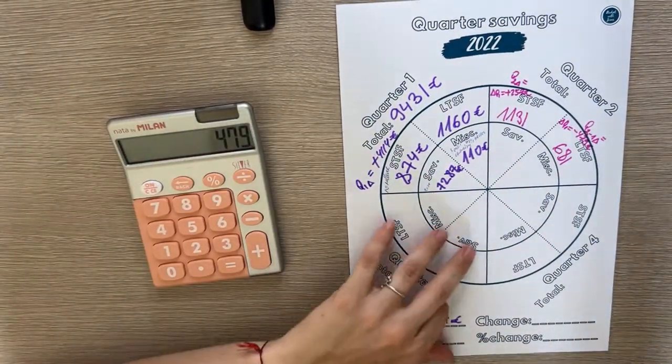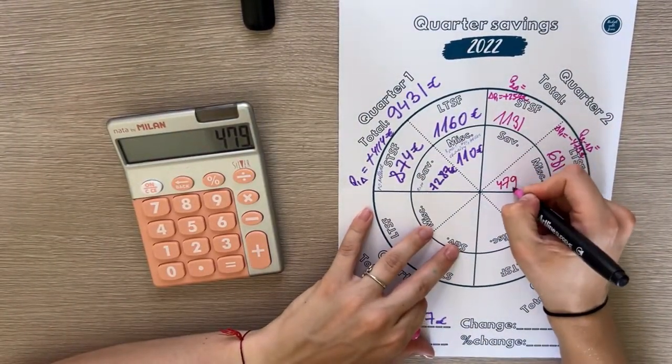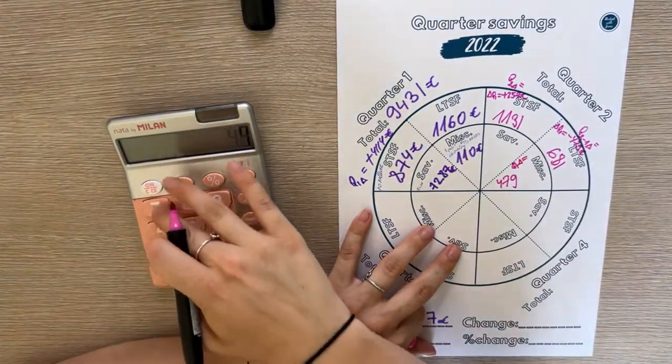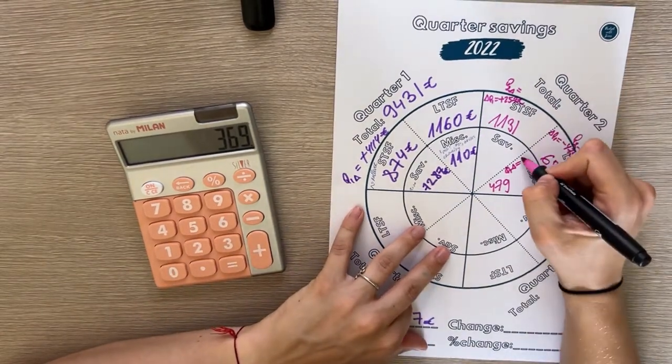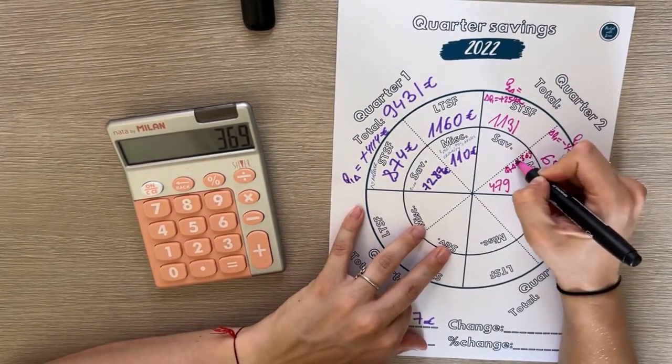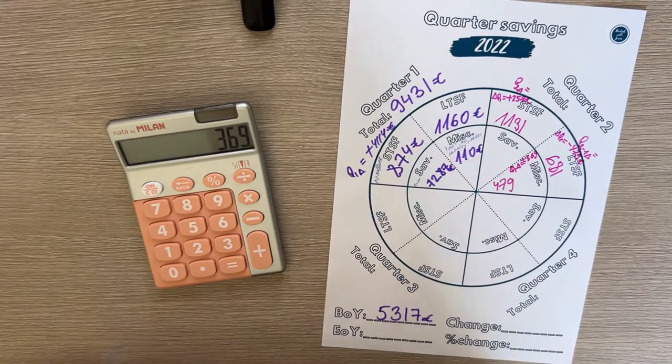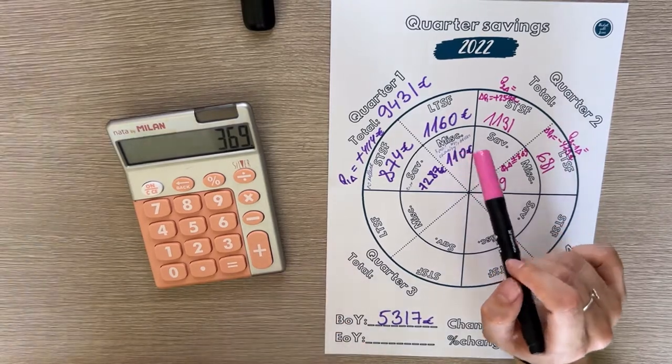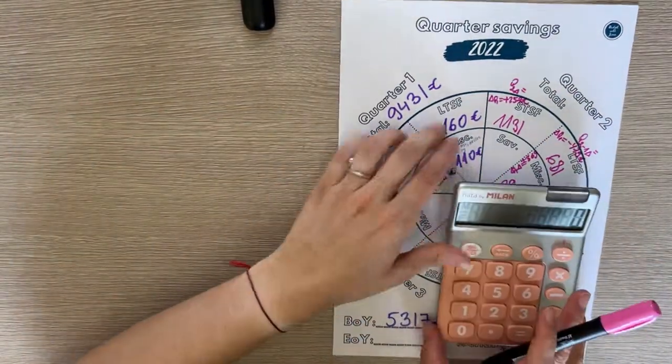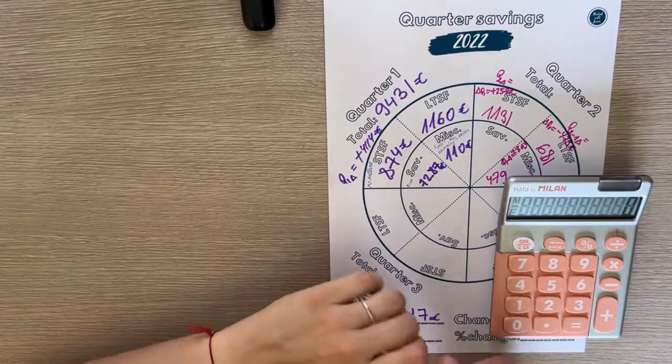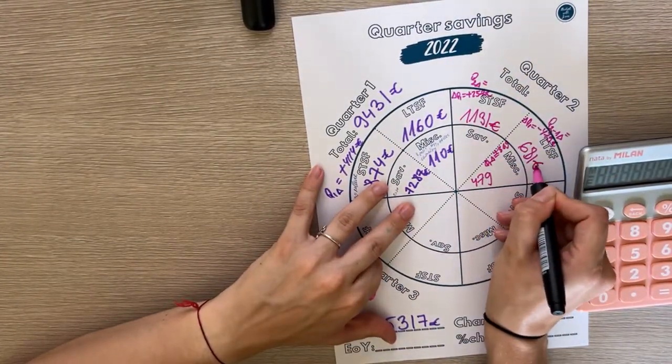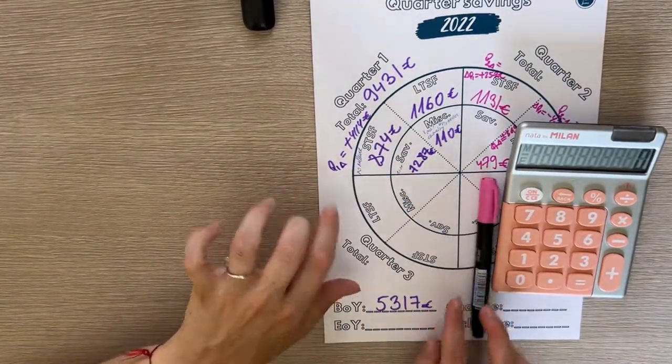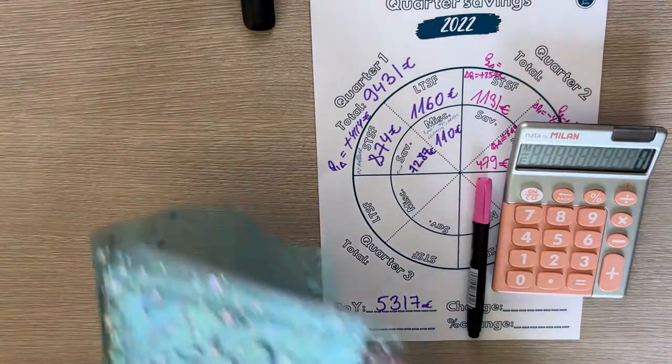In total, miscellaneous is 479 and it's a positive change of 369 euros. At the point when we started quarter one, all of the envelopes in the miscellaneous category were new envelopes, so I didn't have a starting balance. I'm not surprised that it went up by so much because we just managed to stuff more in the other three months after quarter one.